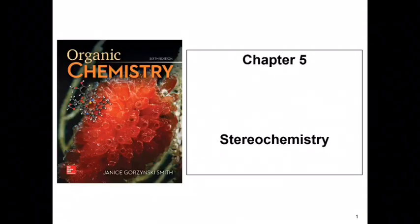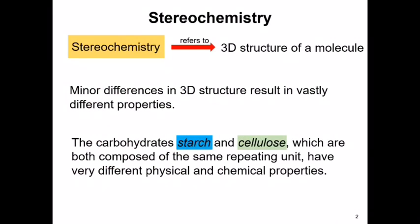Hello everyone. Today's lesson is going to be regarding chapter 5, which is all about stereochemistry. Stereochemistry basically refers to the three-dimensional structure of organic molecules. You already learned in general chemistry and in the previous chapters that structure basically determines a molecule's physical and chemical properties. Even small, minor differences in the three-dimensional structure can actually make a huge difference in the molecule's physical and chemical properties.